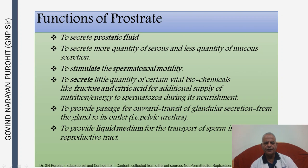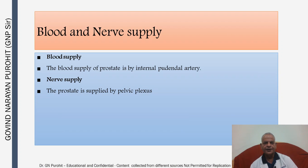The functions of the prostate include: secreting the prostatic fluid with more serous and less mucus secretion; stimulating spermatozoa motility; secreting biochemicals like fructose and citric acid; providing passage for transit of glandular secretion to its outlet; and providing the liquid medium for transport of sperm in the reproductive tract. The prostate has a blood supply through the internal pudendal artery and is supplied by pelvic plexus nerves.